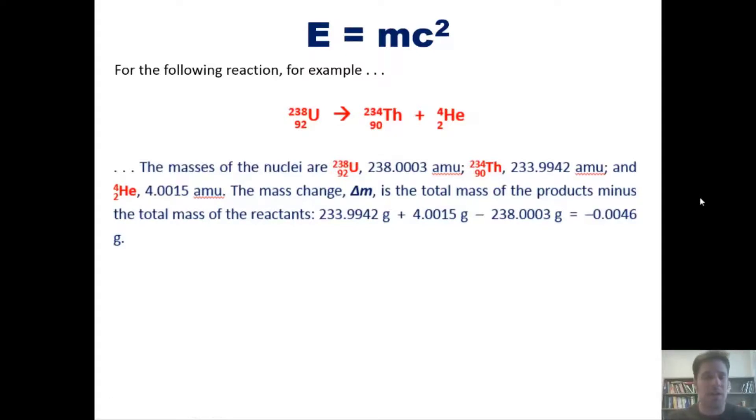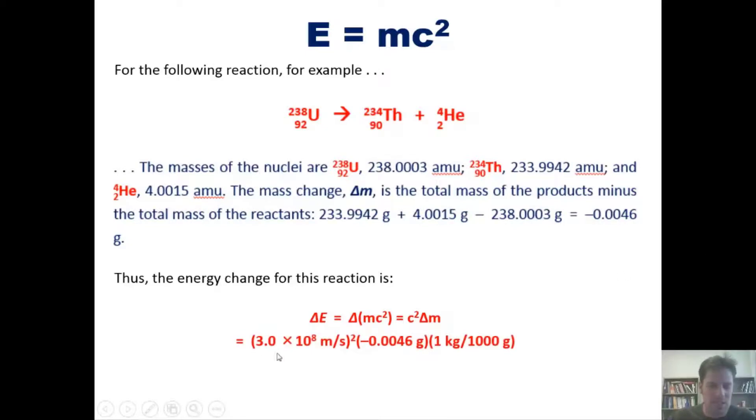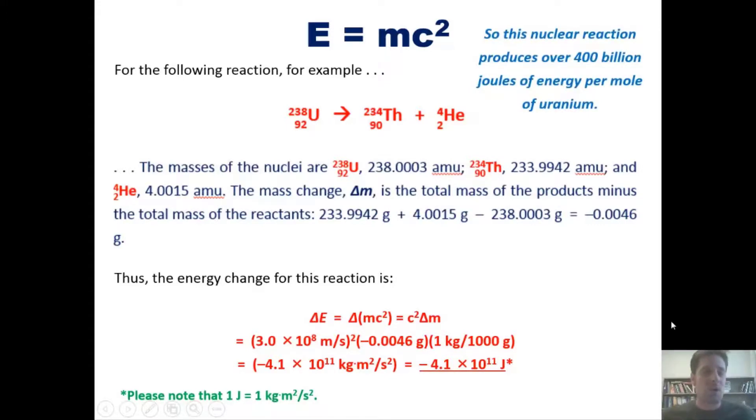Thus, the energy change for this reaction is E equals mc squared, or delta E being equal to delta m times c squared, which is just c squared times delta m, or c squared times the change in mass, since c itself doesn't actually change, just m. If we throw in our numbers, then we're going to see that c, the speed of light, 3 times 10 to the 8 meters per second, is going to be squared here. We throw in for our delta m this negative 0.0046 grams, and then we convert it to kilograms as the SI unit. It ends up coming to negative 4.1 times 10 to the 11th kilogram meter squared per second squared. Please note that kilogram meter squared per second squared is the same thing as a joule. So this number is actually negative 4.1 times 10 to the 11th joules. We can see then that this nuclear reaction produces over 400 billion joules of energy per one mole of uranium. Is that a lot more than combusting methane gas? Oh yeah.